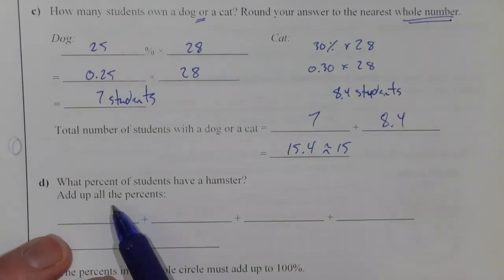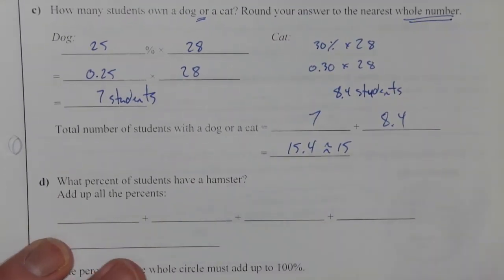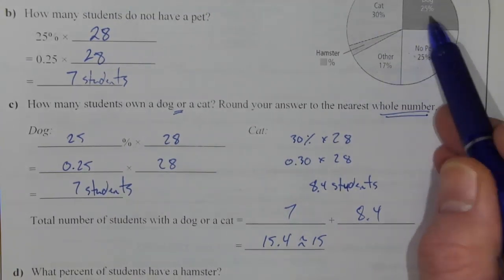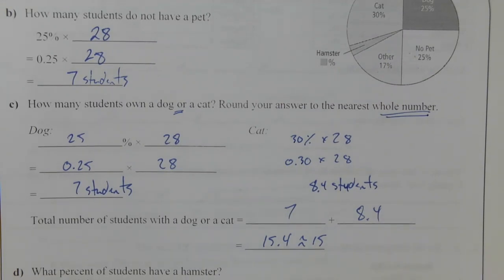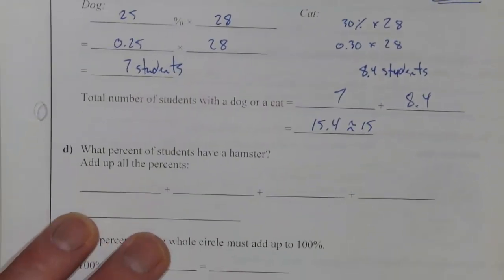Now, what percentage of the students have a hamster? Well, we need to add up all of these pieces, see what they total, and then whatever is left over before you hit 100%, that's going to be the hamster total. So, let's add them up.